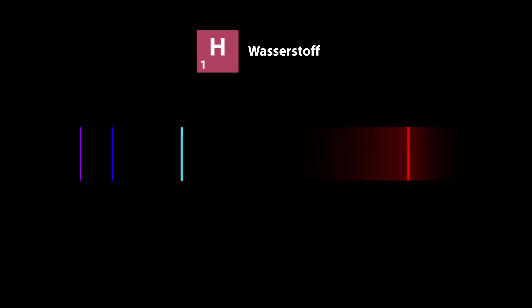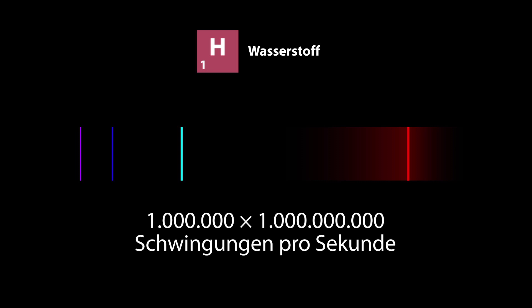The four visible lines of the hydrogen spectrum correspond to electromagnetic oscillations with frequencies in the order of magnitude of 1 million times 1 billion oscillations per second.